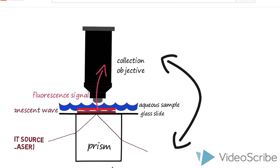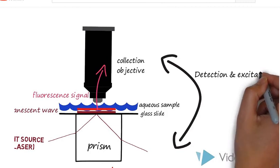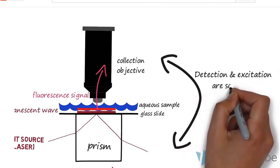Note that the excitation and emission parts of the microscope are situated on opposite sides of the sample. This allows the objective to collect only the fluorescent signal.